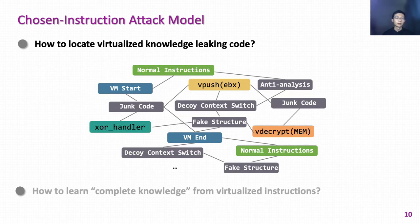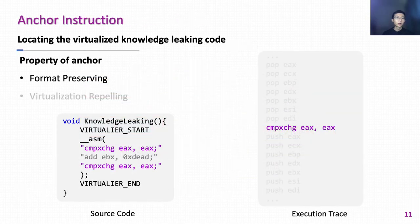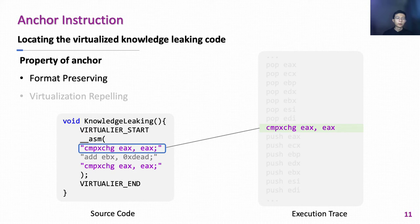There are two problems CIA attackers have to solve. The first is how to locate the virtualized knowledge-leaking code. Even if CIA attackers control the contents of the input programs, they still face heavy obfuscation. To locate the virtualized knowledge-leaking code, we designed the anchor instruction. In a nutshell, an anchor is a kind of instruction that cannot be virtualized by obfuscators. An instruction has to satisfy two conditions to become an anchor. The first is format preserving — the anchor instruction must keep its original representation in virtualized programs, helping CIA attackers easily locate it from an execution trace.